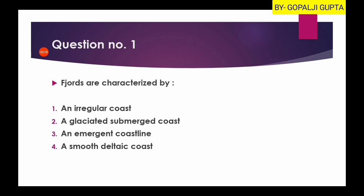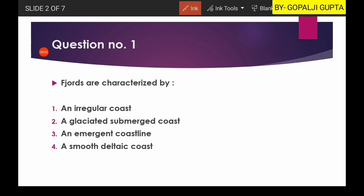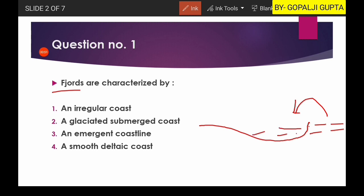Question number one: fjords are characterized by — options are an irregular coast, a glaciated submerged coast, an emergent coastline, or a smooth deltaic coast. Fjords are the erosional product of glaciers. Oceanic water fills in the lowland eroded area, and this is known as a fjord. So fjords represent a glaciated submerged coast.